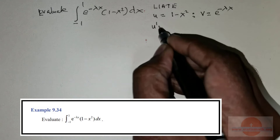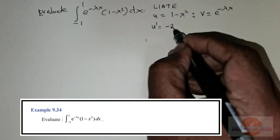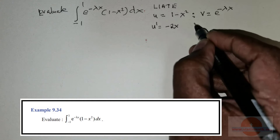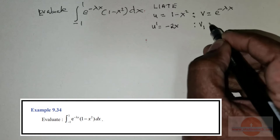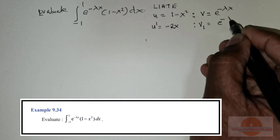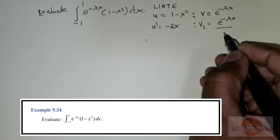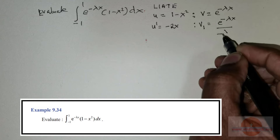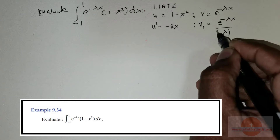We differentiate u, so the differential of 1 minus x squared gives us negative 2x. And we integrate v, so v₁ is going to be e raised to the power negative lambda x. The coefficient of x is negative lambda, so we place negative lambda in the denominator.